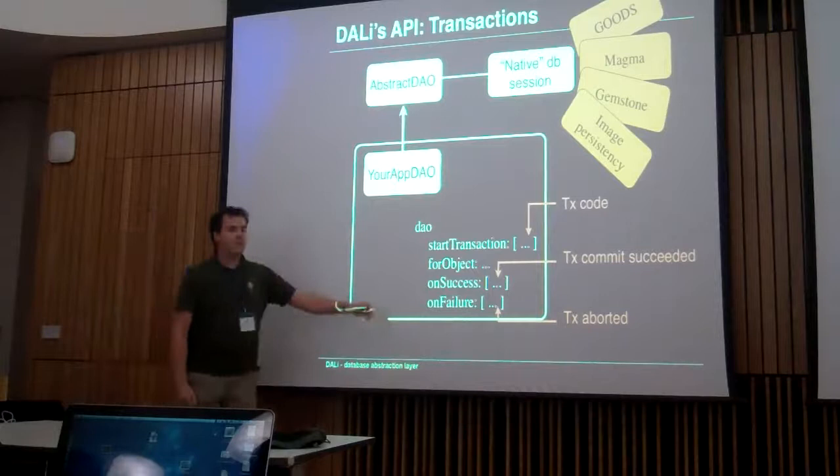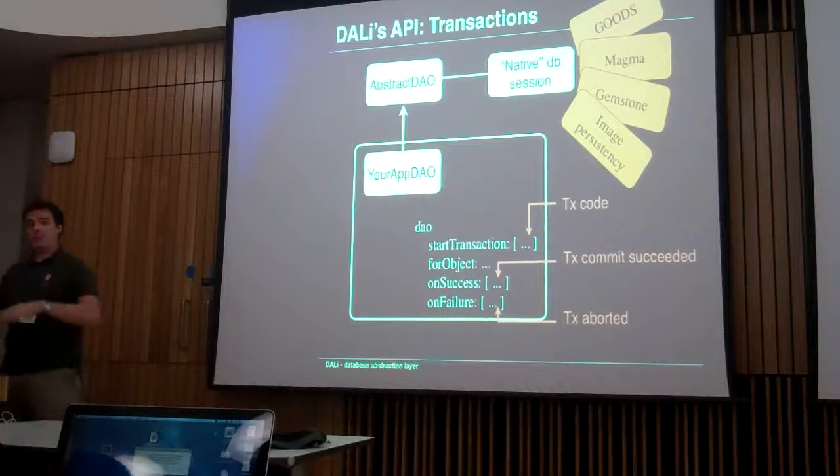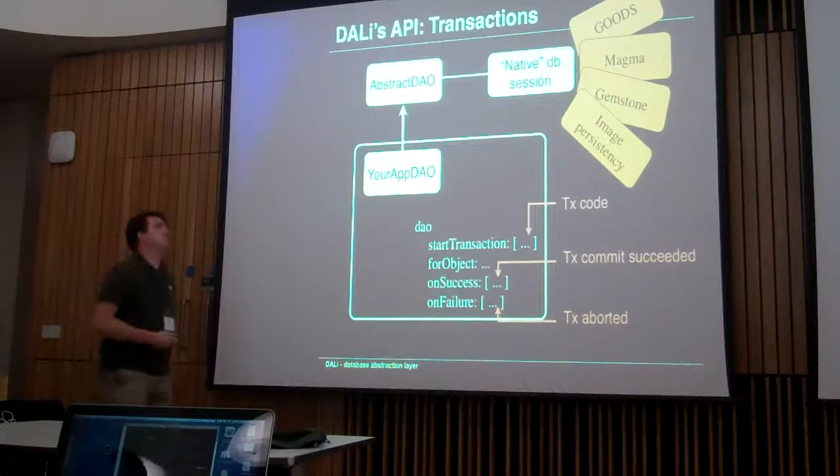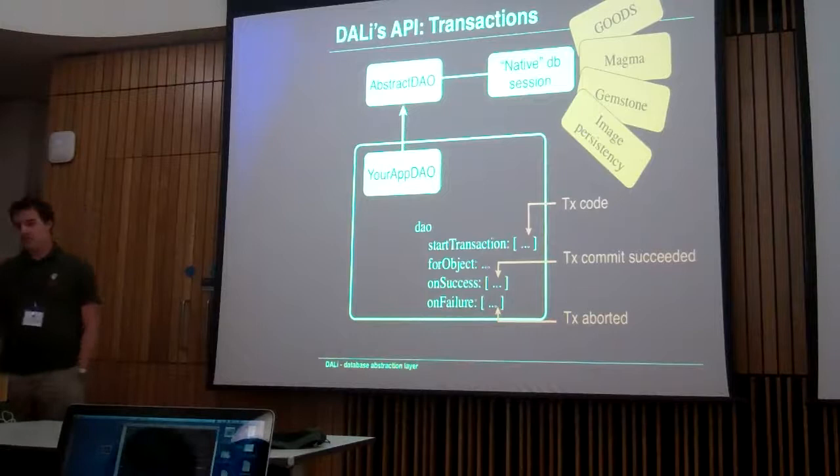So what did we do? Actually, this kind of API already started before we moved to Glass. We only realized: if we move to Glass, we have a huge problem, because we rely on the database connection to detect all conflicts for us. We don't do anything natively. So we have to put this into the database abstraction layer.